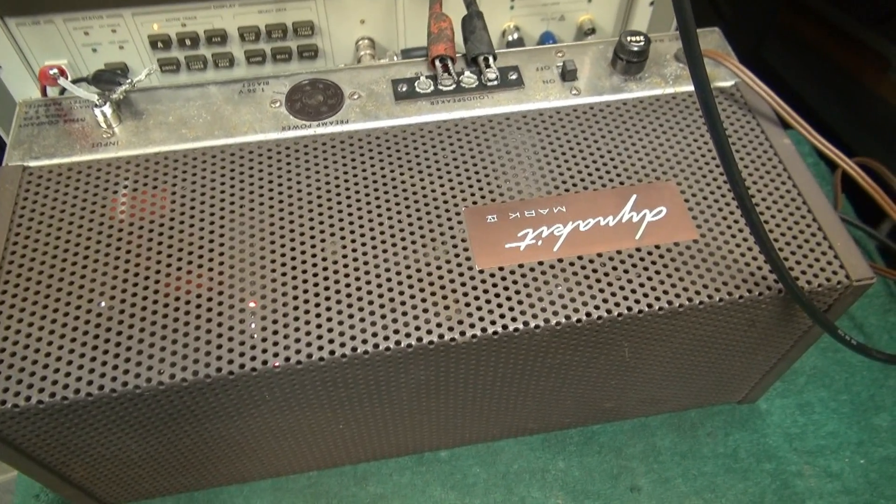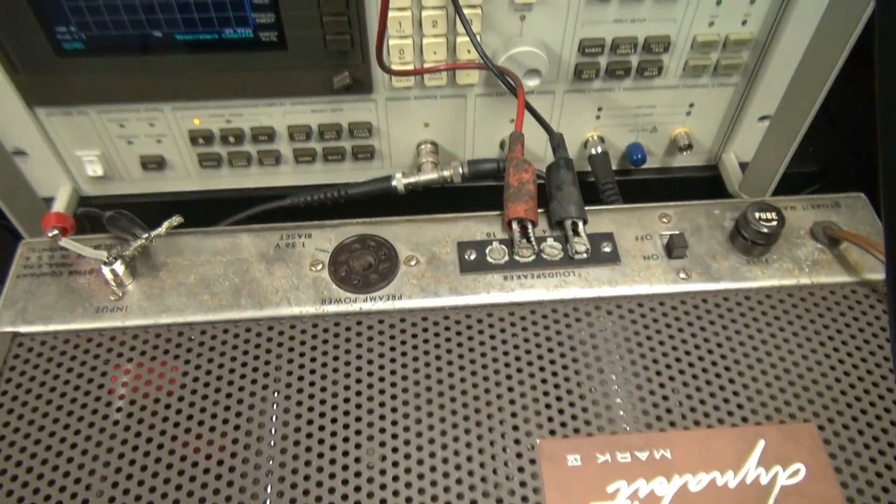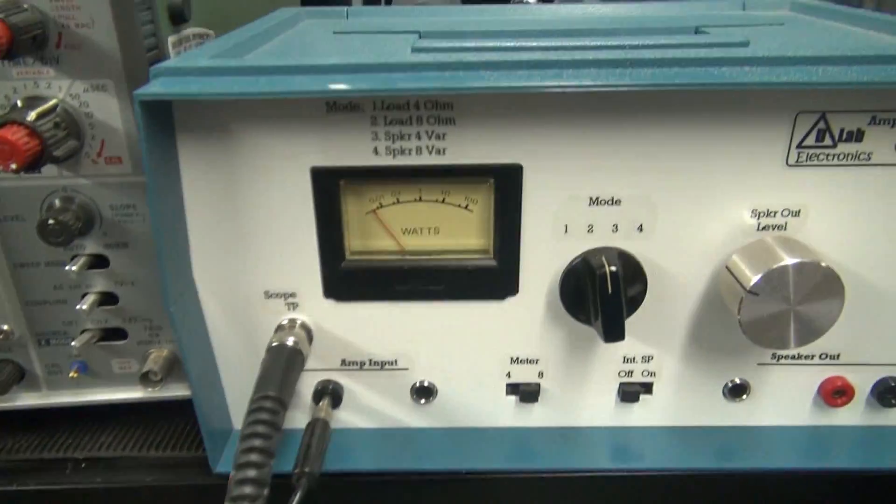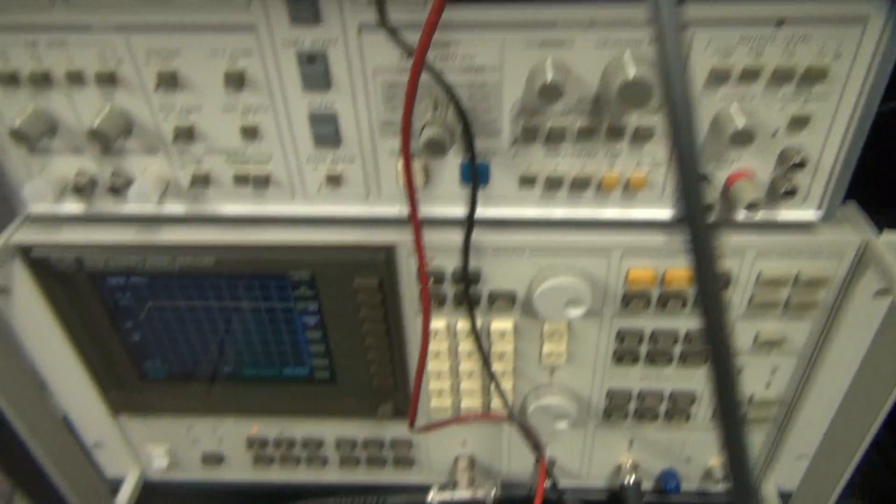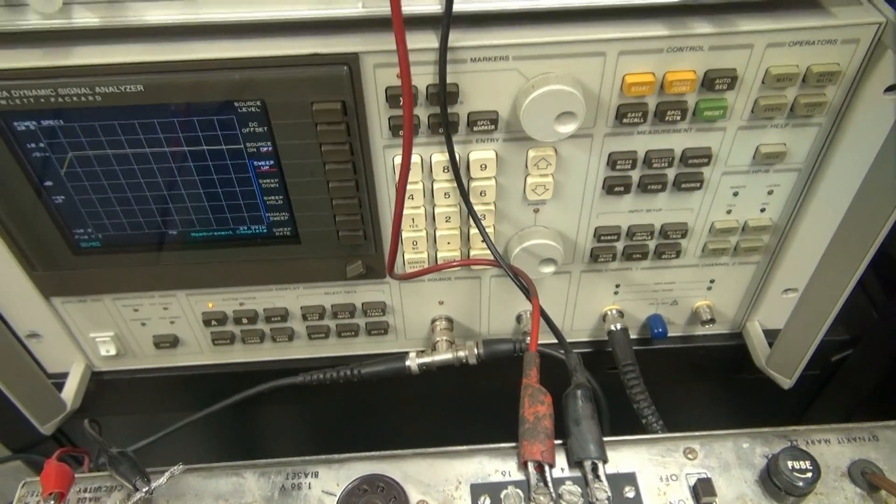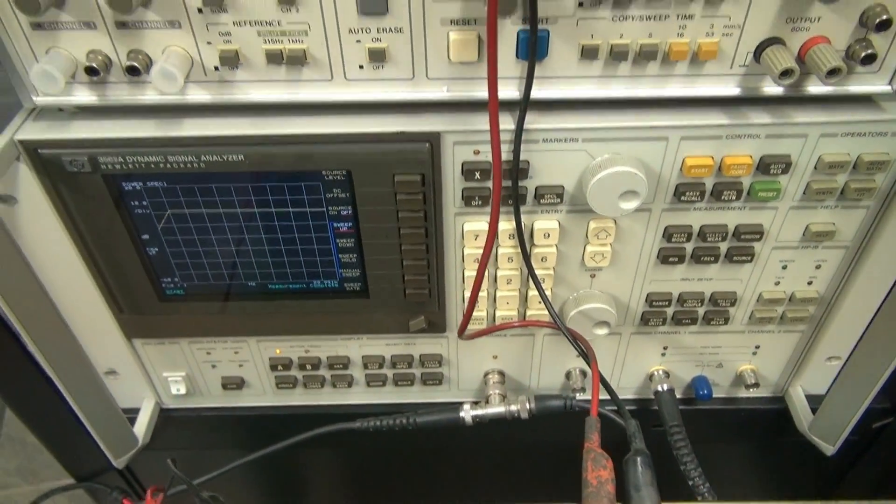So there's the old Dyna kit sitting on its side. The speaker is hooked up to the D-Lab audio test set. The input is coming from the source on the HP signal analyzer.